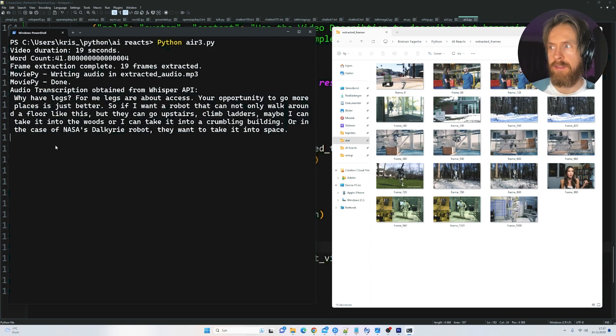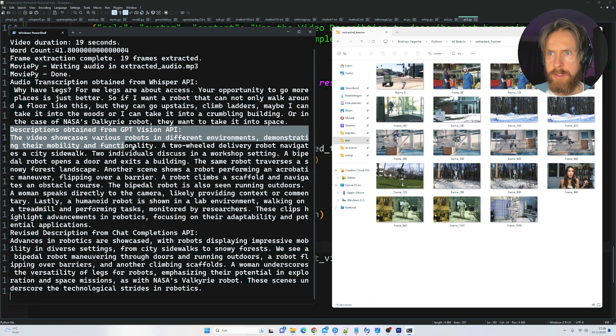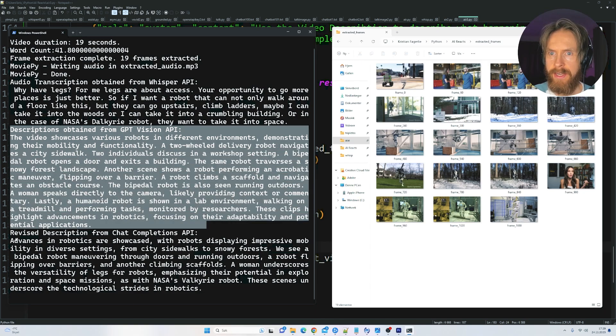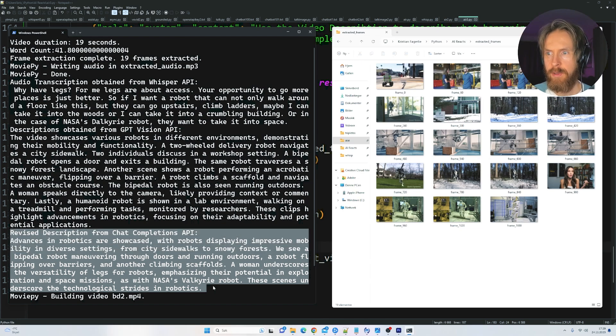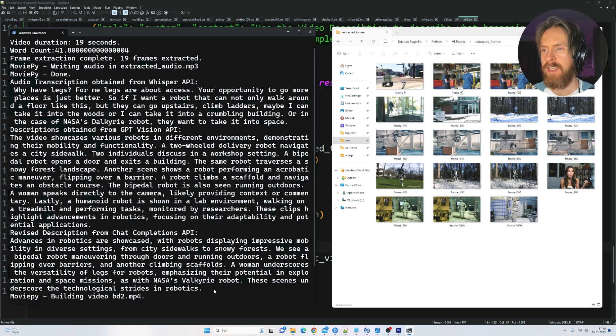Next is probably gonna be the Whisper API audio transcription. So this was every word that was said in the video. And of course the next is gonna be the description of the frames. Here you can see the description obtained from the Vision API and here is the revised description. This looks too long to be honest but we can adjust this.